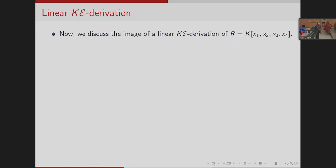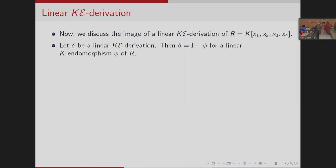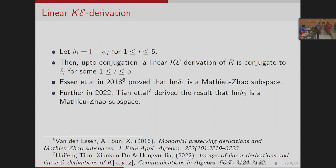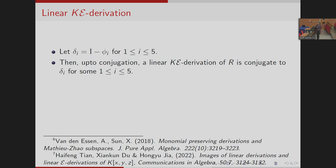Now I will talk about linear k_e-derivations of R. If delta is a linear k_e-derivation, then delta equals identity minus phi for a k-endomorphism phi of R. Corresponding to the five possible Jordan blocks of a 4×4 matrix, we have five different k-endomorphisms phi of R up to conjugation. Therefore, a linear k_e-derivation of R is conjugate to delta_i for some i between 1 and 5. To prove that the image of delta is a Mathieu-Zhao subspace for any k_e-derivation of R, it suffices to consider the images of delta_i's.